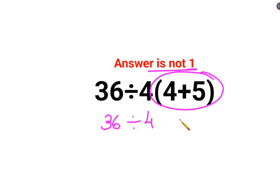So 4 plus 5 is 9, and since there is no sign between 4 and this bracket, it means multiplication.